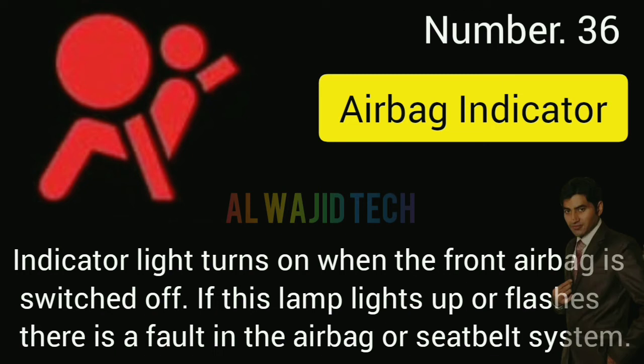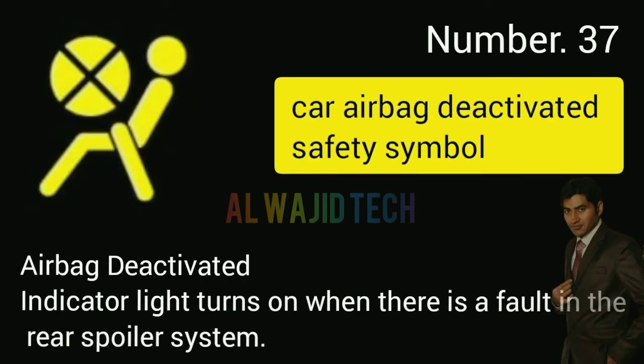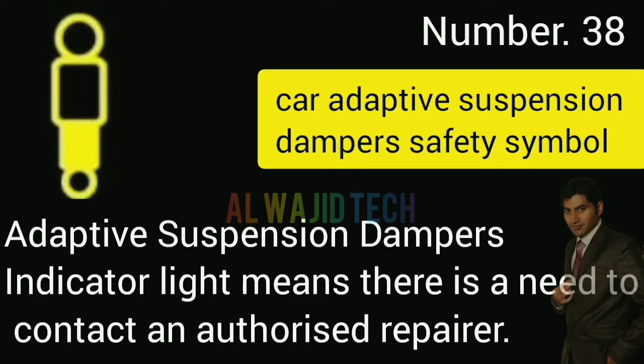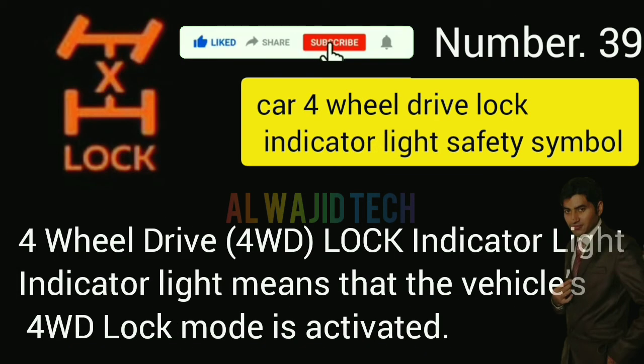Number thirty-six: Airbag indicator turns on when the front airbag is switched off. If this lamp lights up or flashes, there is a fault in the airbag or seatbelt system. Number thirty-seven: Car airbag deactivated indicator turns on when there is a fault in the airbag deactivation system. Number thirty-eight: Car adaptive suspension damper indicator means there is a need to contact an authorized repair center.